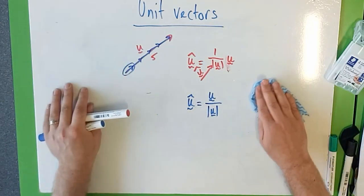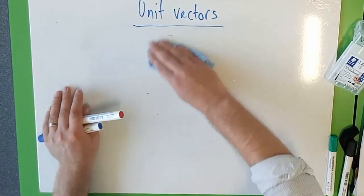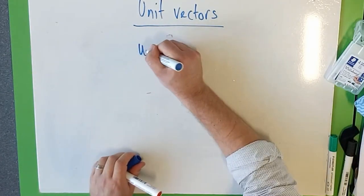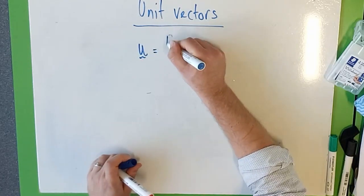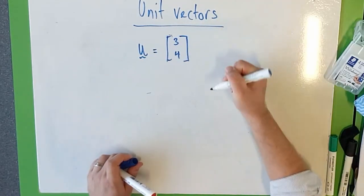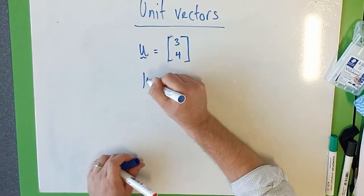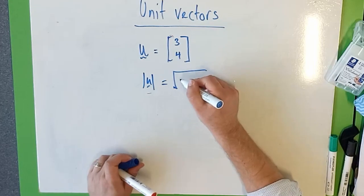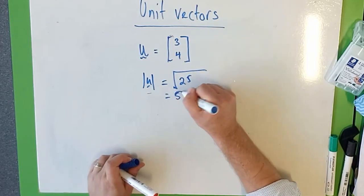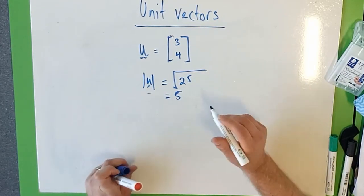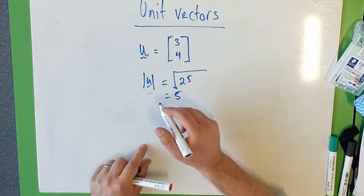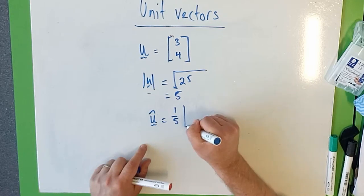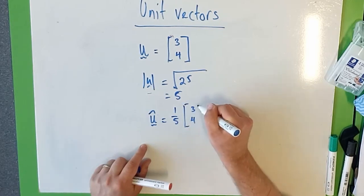Now that's a pretty easy thing to do. Let's do an example. So let's say that u is equal to the column vector [3, 4]. We already know that the magnitude of u is the square root of 3 squared plus 4 squared, square root of 25, which is 5. So therefore u hat is going to equal 1 fifth of the column vector [3, 4].